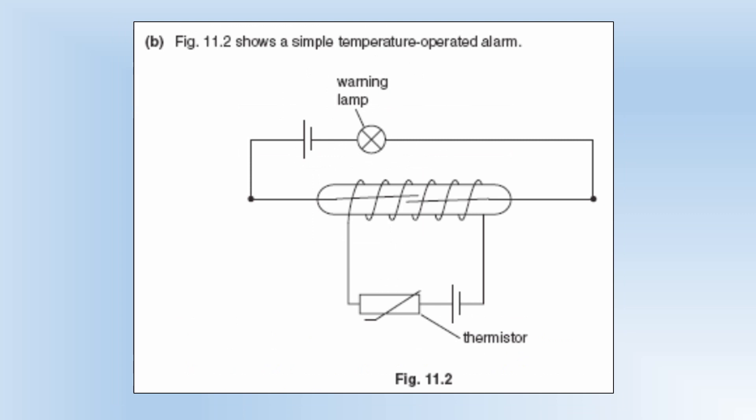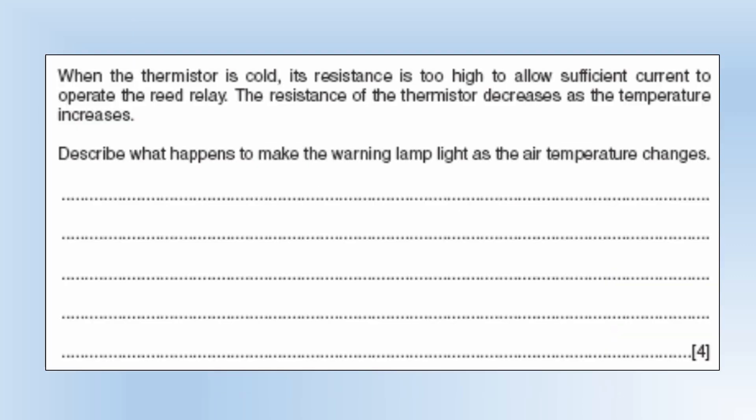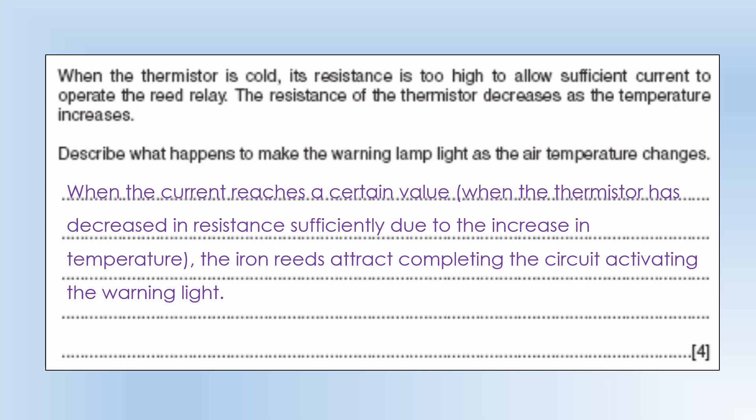That's now been incorporated into a temperature operated alarm where the light bulb is now a warning lamp. And we've got a thermistor to essentially detect temperature changes. When the thermistor is cold its resistance is too high to allow sufficient current to operate the reed relay. So small current means weak magnetic field so we're not going to have a big enough magnetic force to close the switch. The resistance of the thermistor decreases as the temperature increases. Describe what happens to make the warning lamp light as the air temperature changes. Well essentially what's going to happen is when the current reaches a certain value the iron reeds will attract completing the circuit activating the warning light. And the reason the current increases is because the resistance of the thermistor decreased as the temperature rose. So if resistance decreases the current is going to increase.